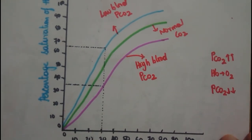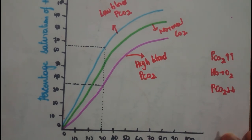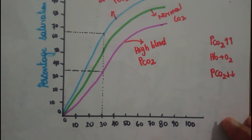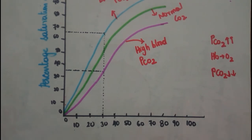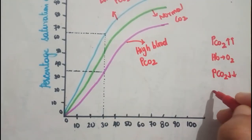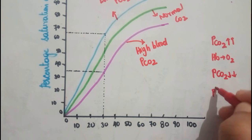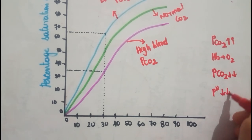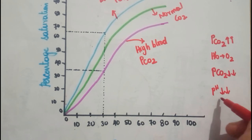Hello guys, welcome back. In the last video we saw about the effect of partial pressure of carbon dioxide, and in this video we'll be seeing what is the effect of blood pH. We know that in Bohr's effect, if there is a decrease in pH, something specific happens to hemoglobin.